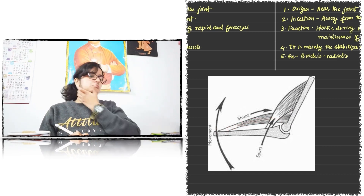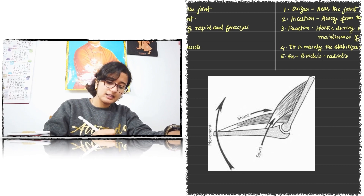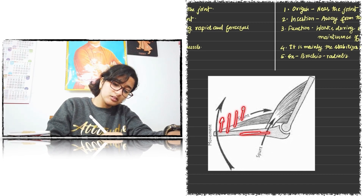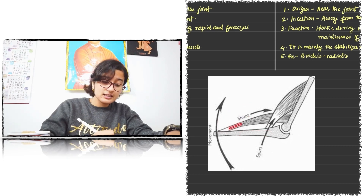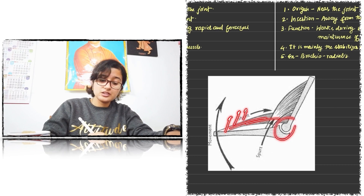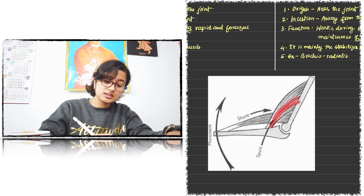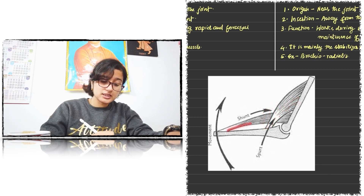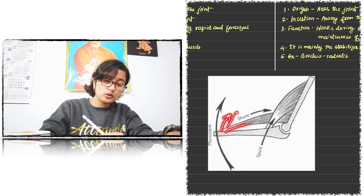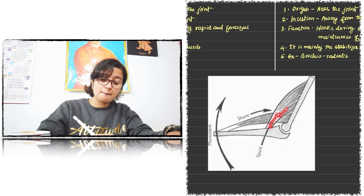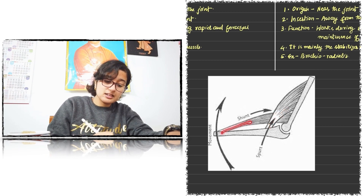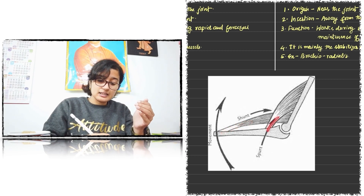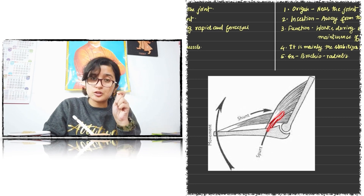Now, what are their functions? When the shunt muscle contracts, the bone slowly moves — so the shunt muscle helps in slow movement and stabilization of the joint. When the spurt muscle contracts, there is a rapid rotatory movement. So the function of the shunt muscle is to slowly move and stabilize the joint, and the function of the spurt muscle is to rapidly rotate the joint.